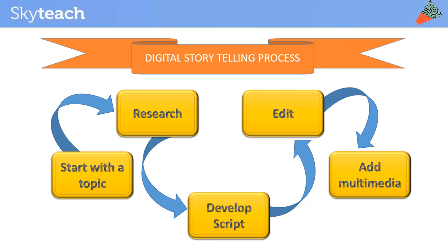The digital storytelling process has five steps. You start off with a topic, then research about it to extract appropriate material, then use your prior knowledge to develop a script and edit it. After editing, the next step is to add multimedia.